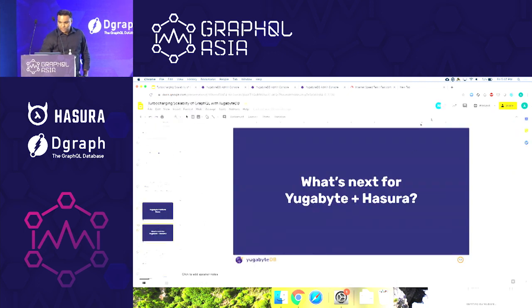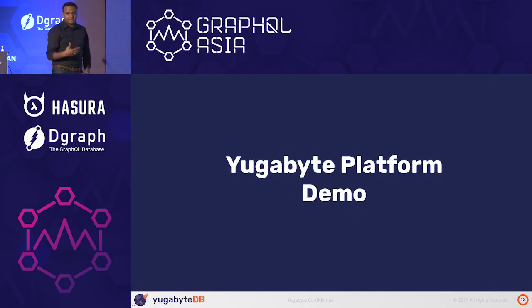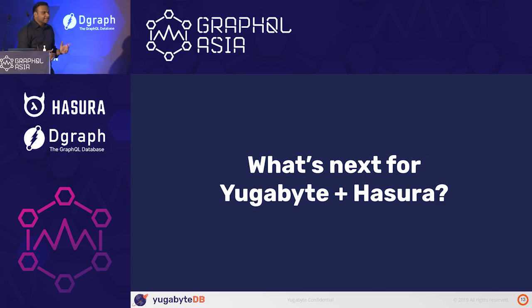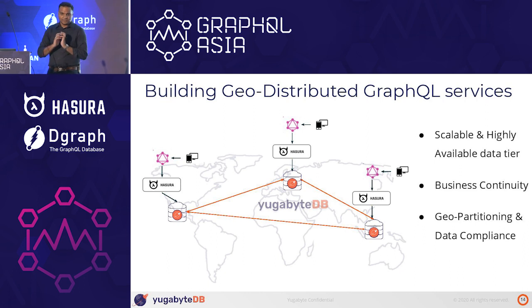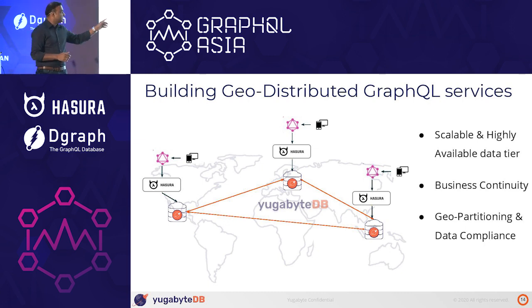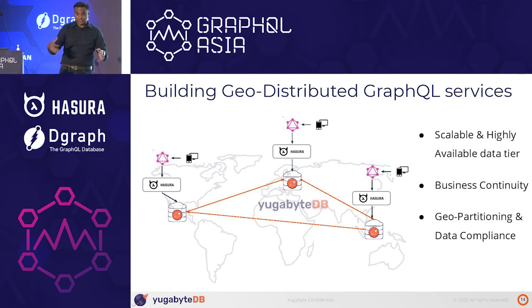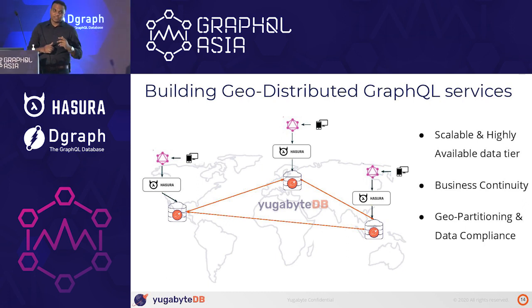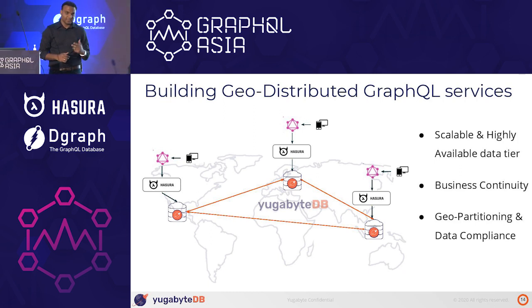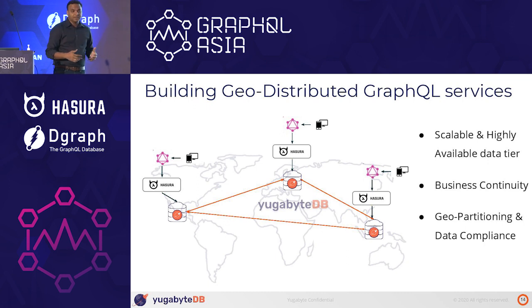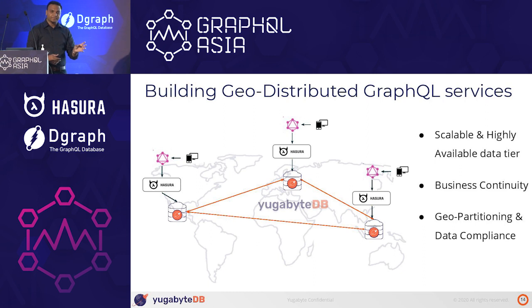With this combination of distributed SQL and GraphQL, you can now truly build geo-distributed GraphQL services. You deploy stateless GraphQL services across different regions or data centers, connecting to a distributed database on the back end. Data nodes can scale up or down on demand based on user traffic at peak performance. This also gives you business continuity — if the US region of Amazon or Google Cloud goes down, you still have 100% uptime. You can also satisfy GDPR and data compliance regulations by keeping a user's data in a specific geography as required.